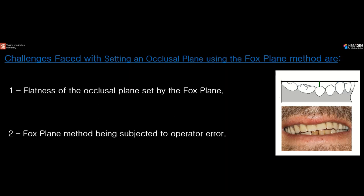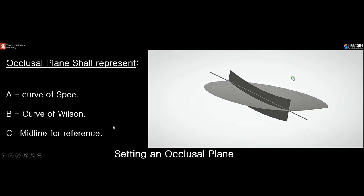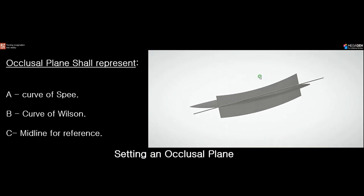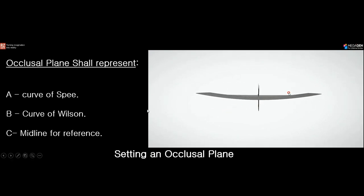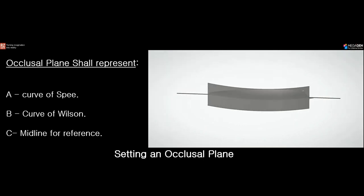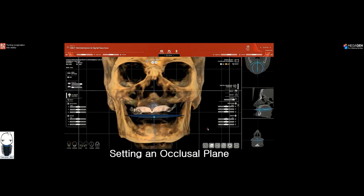To solve these problems we proposed a solution. An ideal occlusal plane should represent a curve of Spee, a curve of Wilson, and a midline for reference. This is the digital occlusal plane we have been introducing in R2Gate Digital Oral Design — it has a built-in curve of Spee, a built-in curve of Wilson, and a midline. Inside R2Gate you can introduce this occlusal plane in the patient's CBCT and adjust its angle, height, and canting.